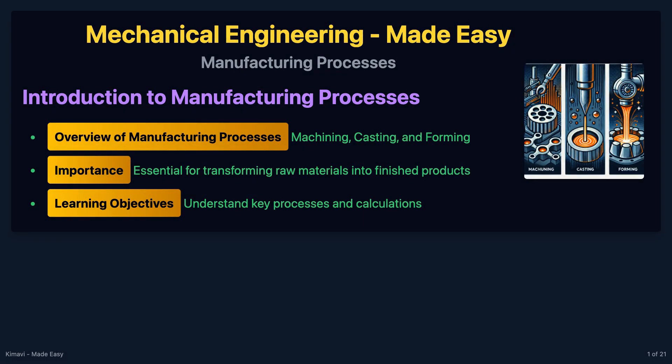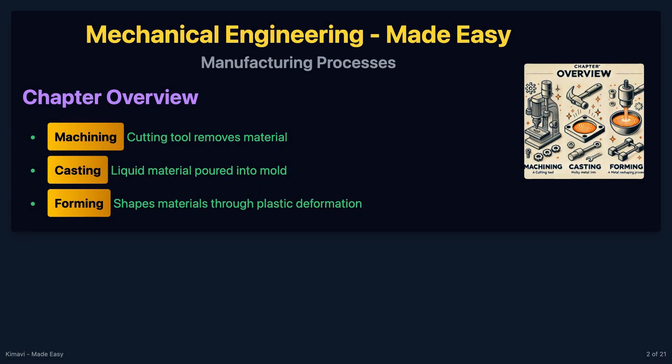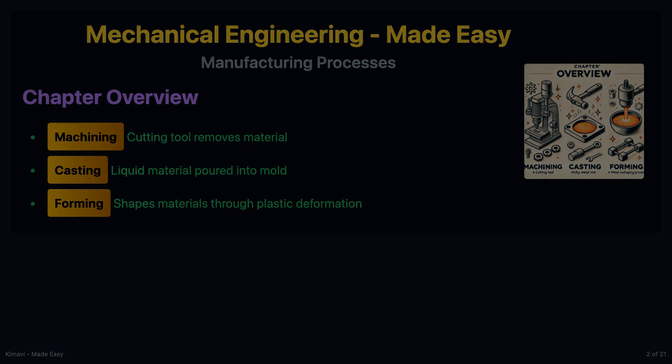Welcome to the chapter on manufacturing processes. Understanding these processes is essential for transforming raw materials into finished products. In this chapter, we will explore the three primary manufacturing processes: machining, casting, and forming.